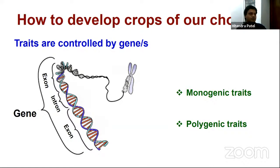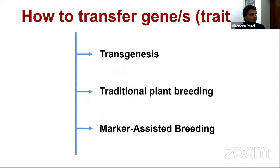How to develop crops of our choice? The traits are controlled by genes. A gene is a segment of DNA that encodes into RNA and protein. These traits could be either monogenic or polygenic — one single gene can control the trait, or there could be many genes. The methods to transfer these traits or genes are: first, transgenesis; second, traditional plant breeding; and third, marker-assisted breeding or marker-assisted selection.